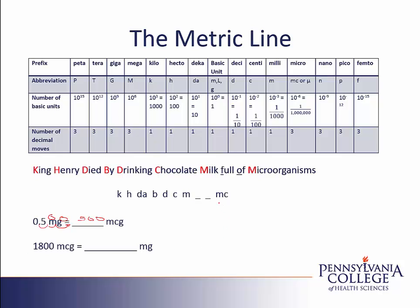For our second example, we're starting with the label of micrograms — starting here — and we want to move to a label of milligrams, so we want to move here. On my metric line, I'm going to move one, two, three jumps in this direction. My decimal is currently at the end of the number, and I'll take my decimal and move it one, two, three jumps. So my decimal will now be between the one and the eight, and my answer is 1.8 milligrams.